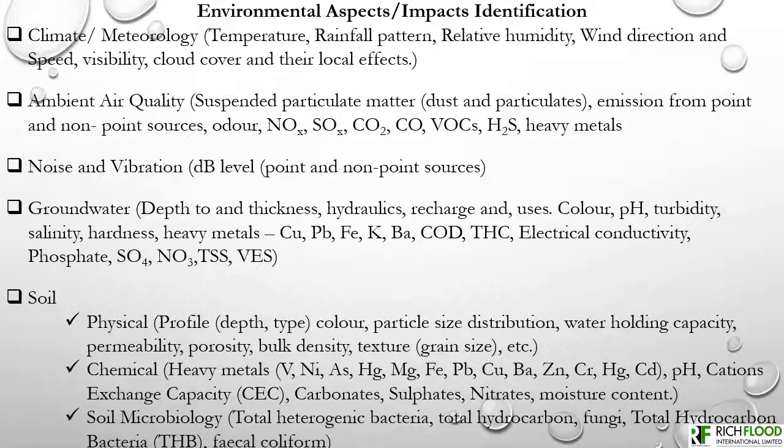Another environmental component to consider is ambient air quality. The impact indicators for air quality range from suspended particulate matter — dust and particulate emissions from point and non-point sources — to nitrogen oxides, sulfur oxides, carbon dioxide, carbon monoxide, volatile organic compounds, hydrogen sulfide, and heavy metals.